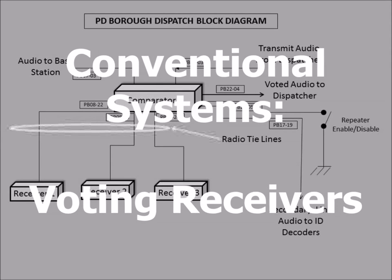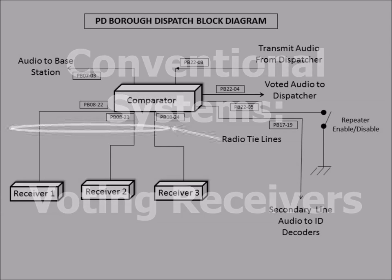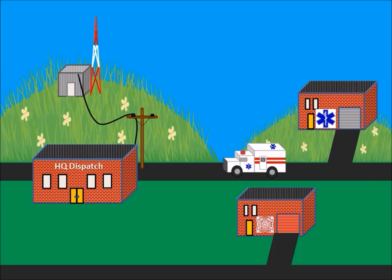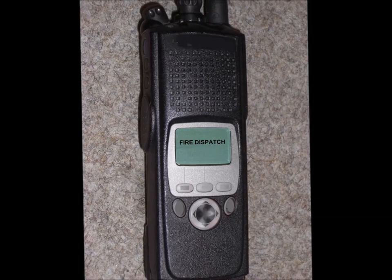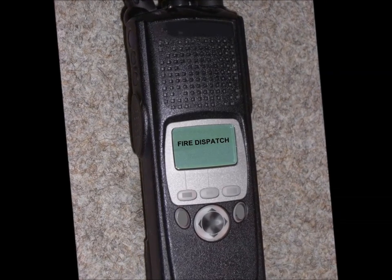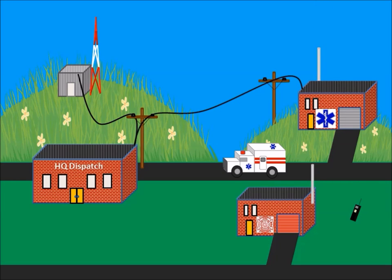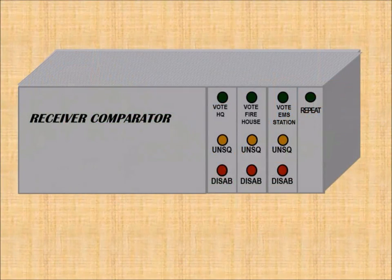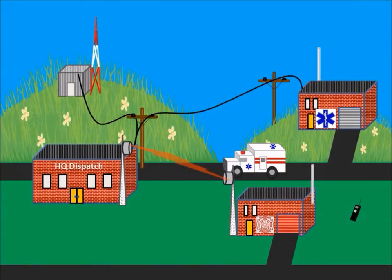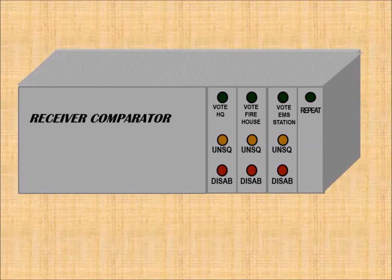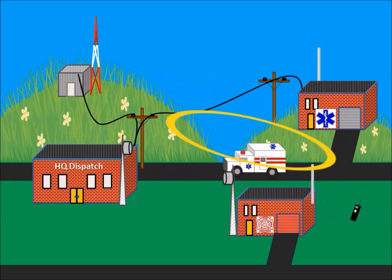We will now discuss conventional systems voting receivers. Systems designed for mobile subscribers may operate satisfactorily with a single site. However, when portable radios are used, the single site may not be able to receive the low-power subscriber. By adding additional receivers — voting receivers — these are connected back to a comparator, a device that monitors the quality of each receiver and provides the best selected audio, also known as voted audio, to the dispatcher.